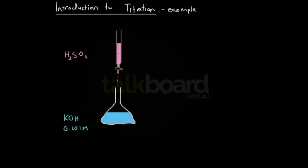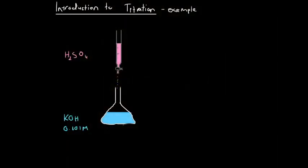What we're going to deal with here is an example of a pretty standard basic titration question. We've got sulfuric acid in the burette — that's the one up here — and we don't know the concentration of that sulfuric acid. That's what we're trying to work out.